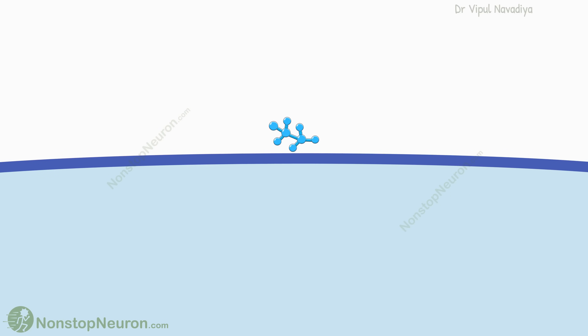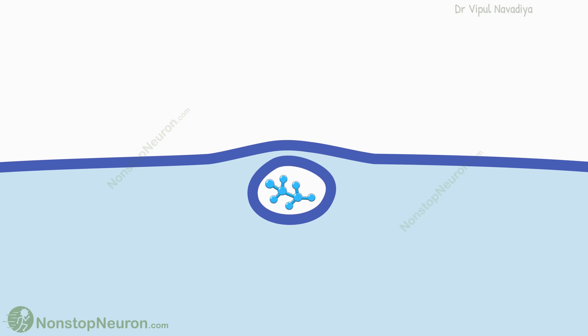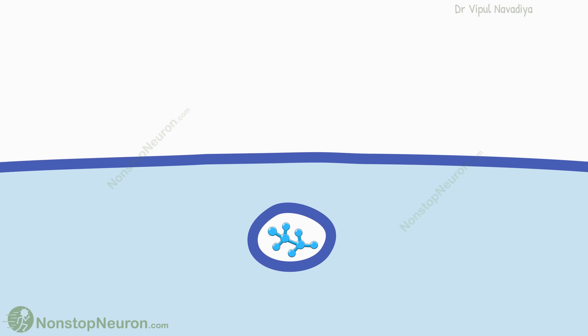Basically in endocytosis, the cell membrane wraps around the particle and then breaks off a vesicle containing that particle inside the cell. The fluid inside this vesicle is actually extracellular fluid from the outside, and the wall of the vesicle is a detached portion of the cell membrane.